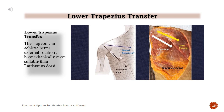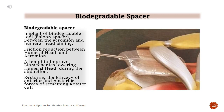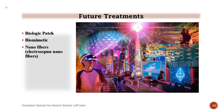Lower Trapezius Transfer: the surgeon can achieve better external rotation, and it is biomechanically more suitable than latissimus dorsi. Biodegradable Spacer: implanting a biodegradable balloon spacer between the acromion and humeral head aims to achieve friction reduction, improve biomechanics by lowering the humeral head during abduction, and restore the efficacy of anterior and posterior forces of the remaining rotator cuff.